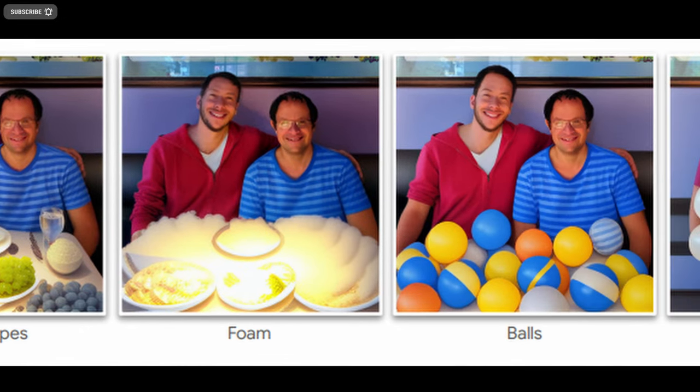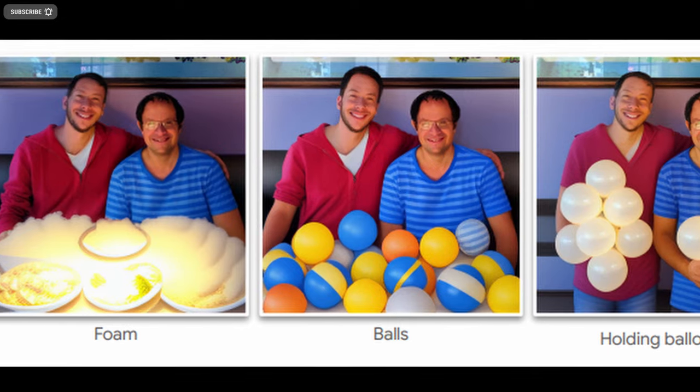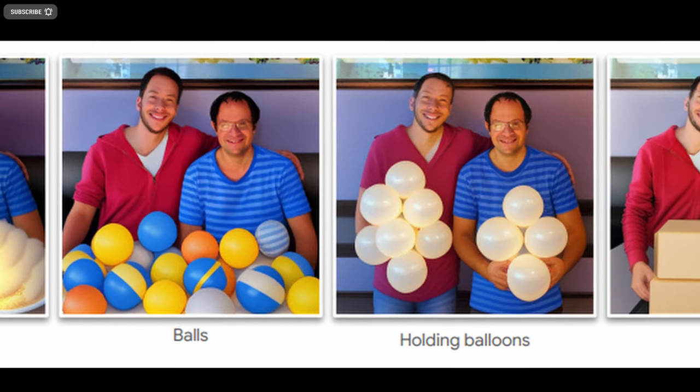The Google AI researchers say that Unitune is the first method to use fine-tuning of a large diffusion model for image editing tasks.